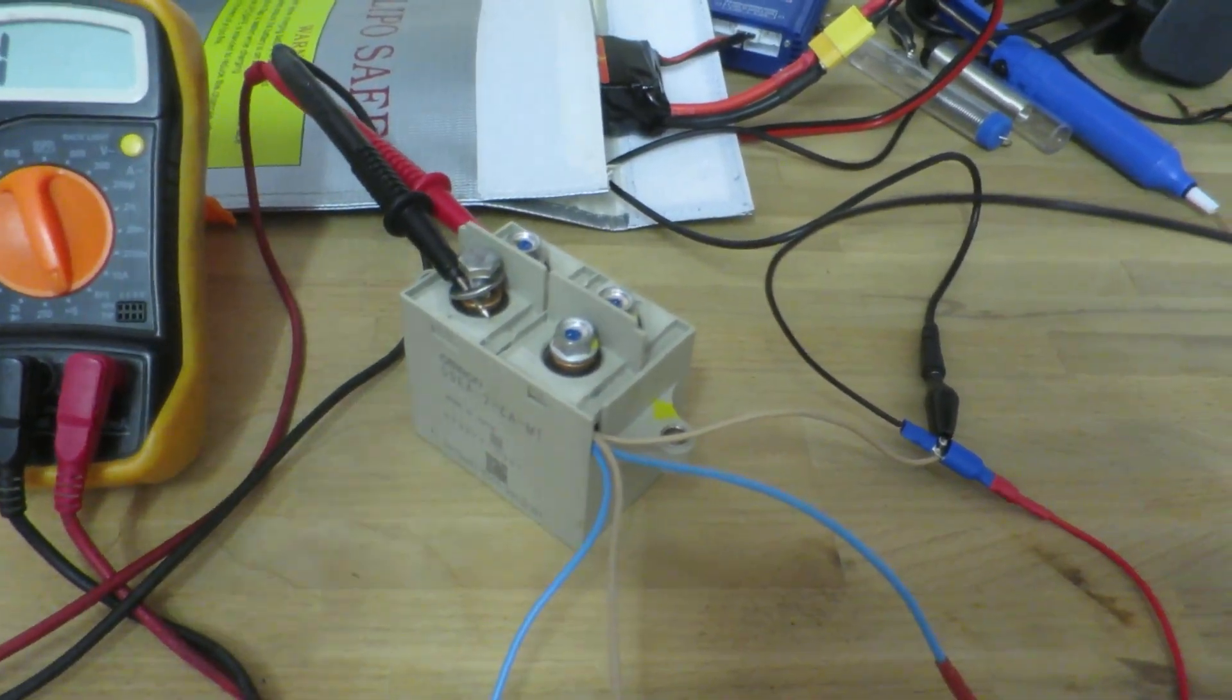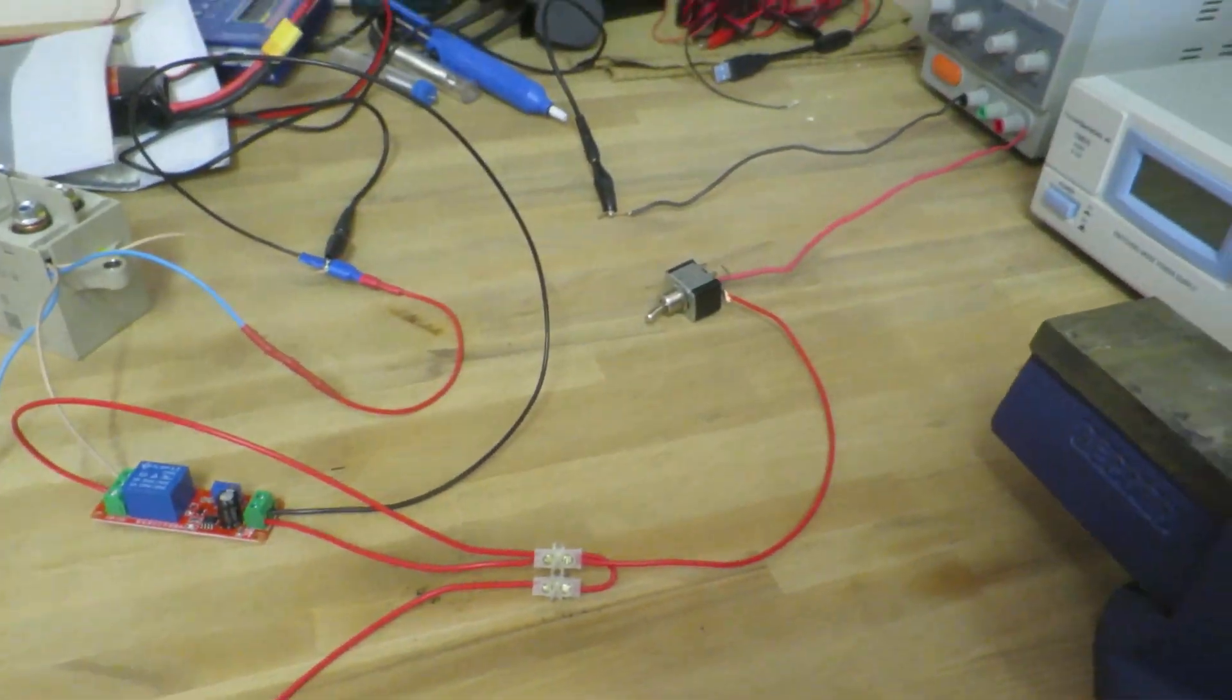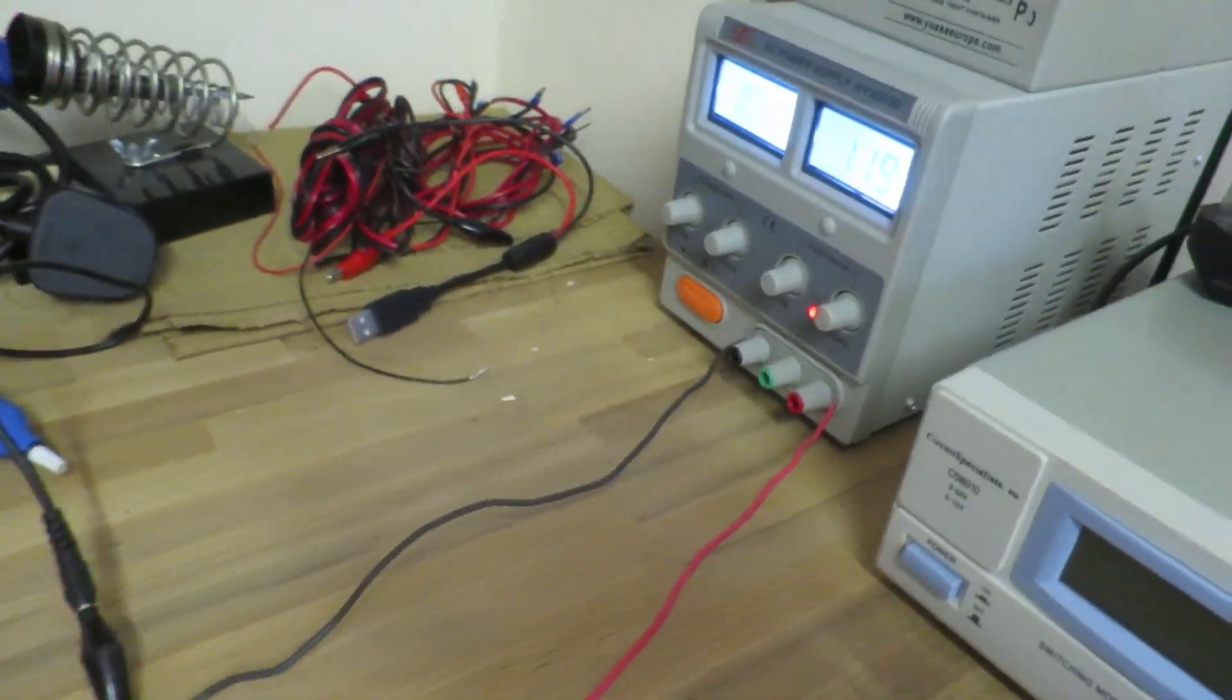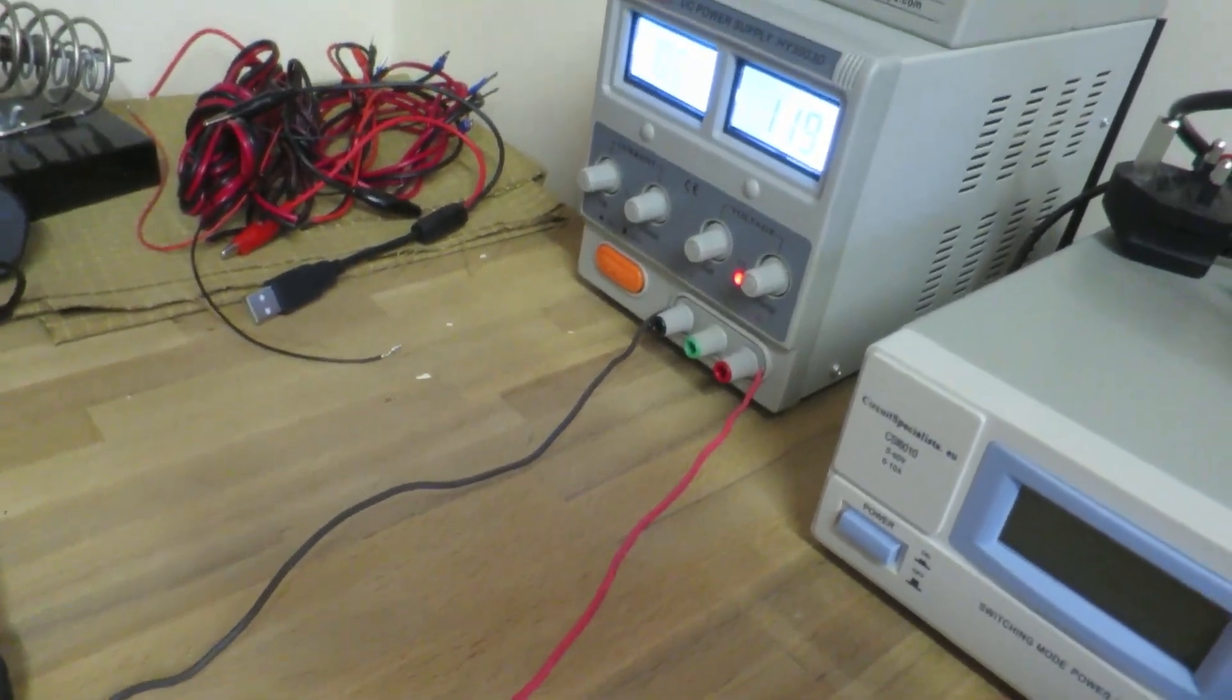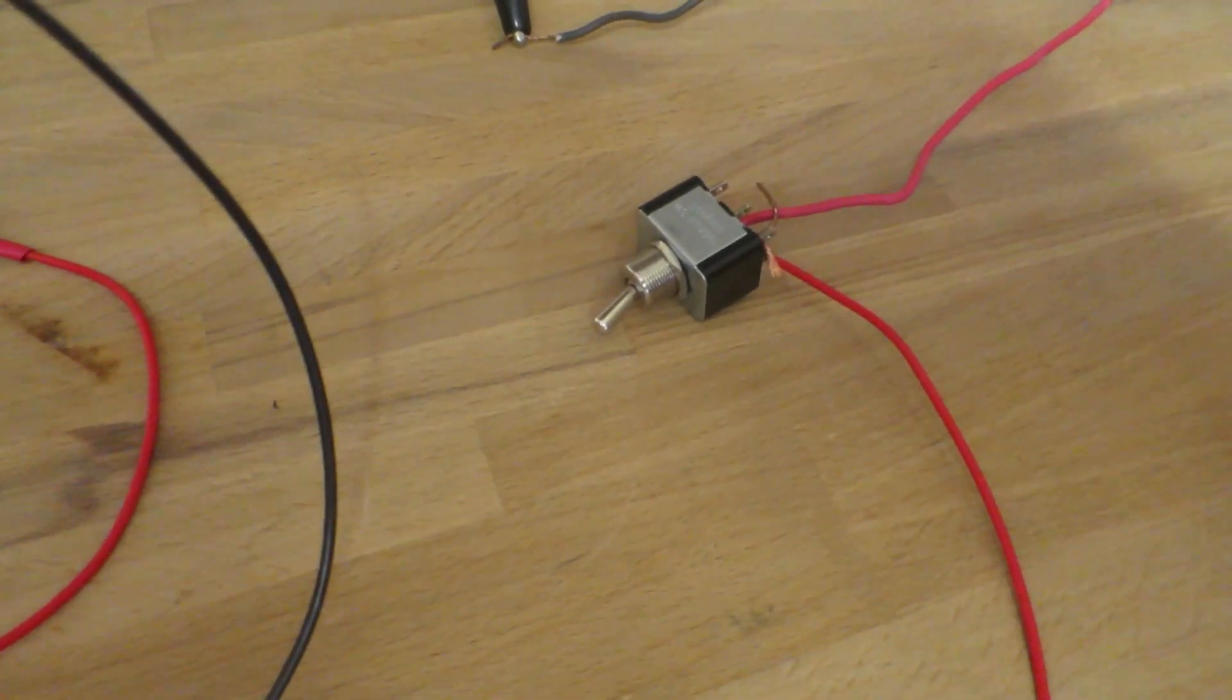So I just want to demonstrate here a pre-charge circuit that I've built and I'm then going to put in the car. I've basically got my power supply outputting 12 volts, simulating the car battery to a switch. I can turn it on and off.